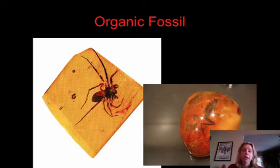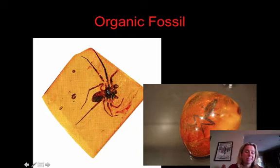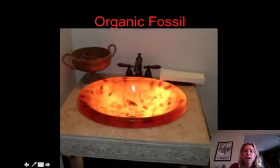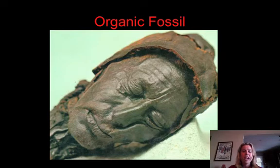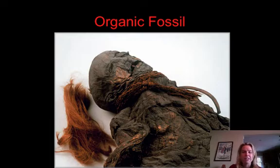Then you have what's called an organic fossil, where the living organism was actually trapped in the process. Those are the ones that they think they can get DNA from. Not only trapped in amber, but also trapped in ice is another place you could find organic fossils. Also, the people found in the peat bogs — they found people that are thousands of years old and perfectly preserved, still with their hair, leather, and their teeth. So that's another example of an organic fossil.